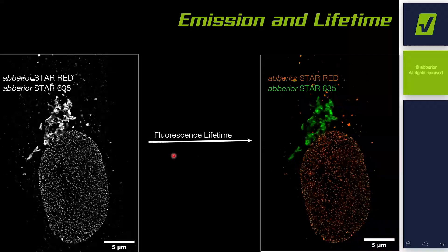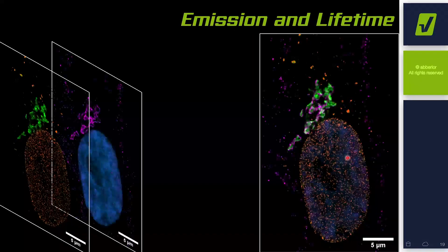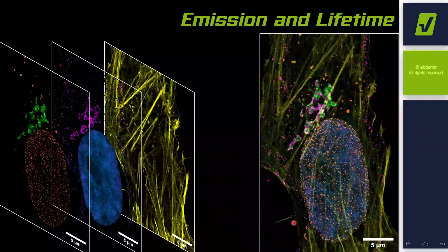Here is an example of a fixed cell stained with Star Red and Star 635. Their emission spectra cannot be separated because they are quite similar. But with fluorescent lifetime as a second piece of information, we can separate Star Red (shown in orange, the nuclear pore complex) from Star 635 (shown in green, the protein in the Golgi). The same cell was additionally stained with Star Orange and Live 590 — the DNA and a second protein in the Golgi. Again, they cannot be separated just by emission spectra, but because they have different lifetimes, we can separate Star Orange (in magenta) from Live 590 DNA (in blue). With this, we can easily create a four-color STED image. And now with the long Stokes shift dye shown earlier, we can add a fifth color.